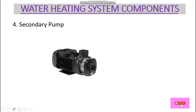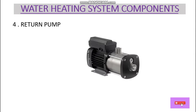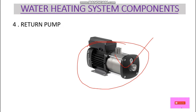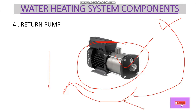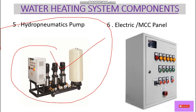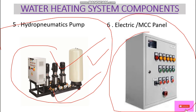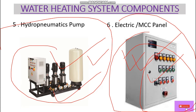The secondary pump helps circulate water from the PHE to the hot water mixing tank. The return pump helps to return the hot water from every fixture and feeds it back to the hot water mixing tank. The MCC panel — the electric panel — is where we can start and stop the heat pump, primary pump, secondary pump, and return pumps. These are the major components of the water heating system by PHE.